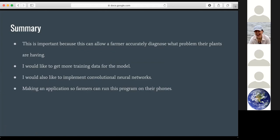So to summarize, this is important because it can allow farmers to accurately diagnose what problem their plants are having. One thing moving forward is that I would like to get more images of leaves to better train the model because 233 images is not a lot. I would also like to implement convolutional neural networks into this. And I have the ultimate goal of making an application so farmers can run this program on their phone and sort of just take a picture of a leaf and it'll automatically diagnose what problem there is.